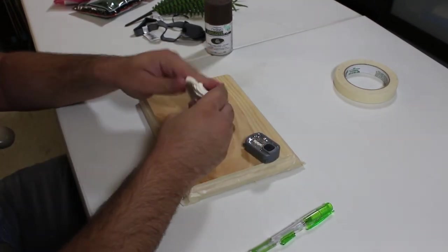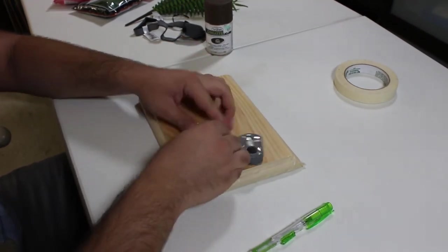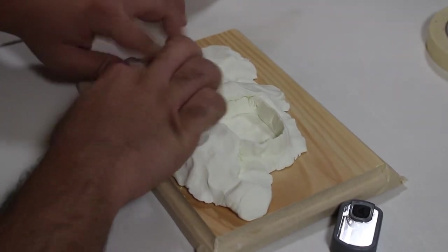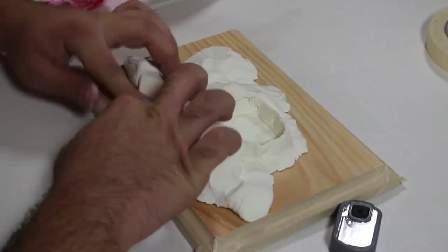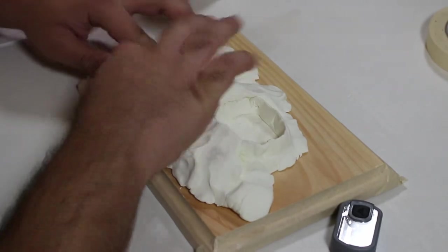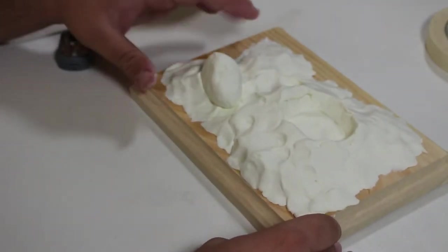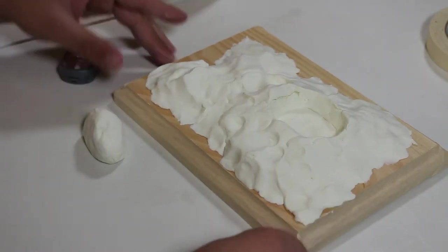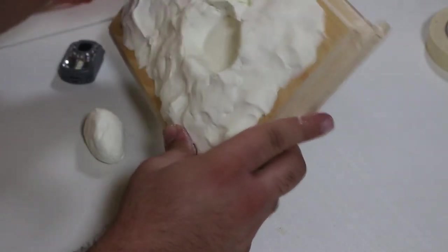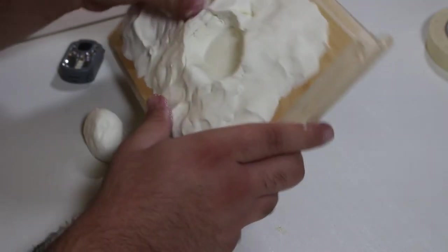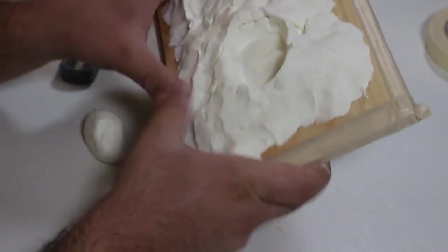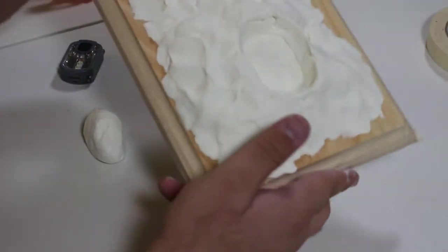So as you guys can see, I've made the surface really rough, give it some texture, just smoothing out some of those dents. It's all going to be filled in anyway later, but the point is I just want it to look really natural.